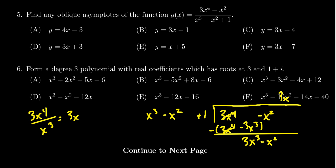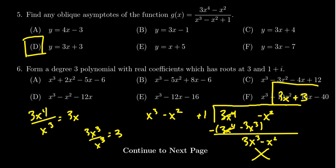We ask the same question: how many times does x cubed go into 3x cubed? That's just 3x cubed divided by x cubed, which gives us 3. So we put in plus 3. At this moment, we can actually stop, because every other calculation would be going towards the remainder, which we don't need — the oblique asymptote is the quotient. Therefore, the correct answer is D: the oblique asymptote is the line y equals 3x plus 3.